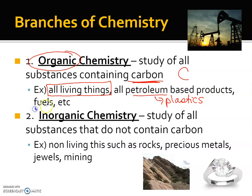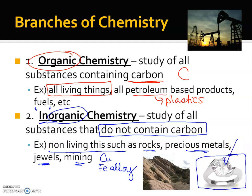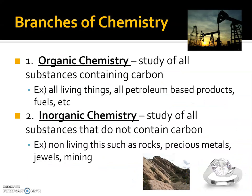If we put the prefix 'in' in front of organic chemistry, that means not carbon. So inorganic chemistry covers things that do not contain carbon — non-living things like rocks, metals, jewels, anything related to mining. If you're looking for copper to make conductors for electrical circuits, or trying to find a good iron alloy so that you don't get rusting. For example, in a diamond ring, the diamond itself is organic — it's pressed carbon — but the gold casing, white gold with silver, and rocks like silicon dioxide or quartz are studied in inorganic chemistry.